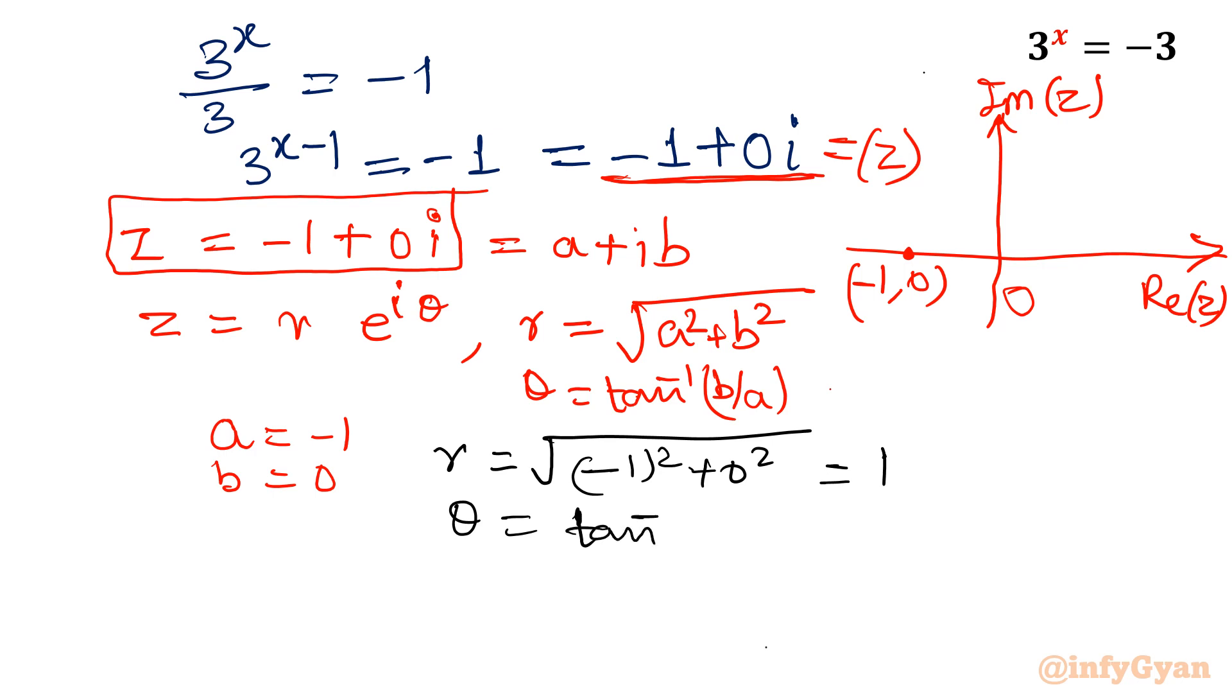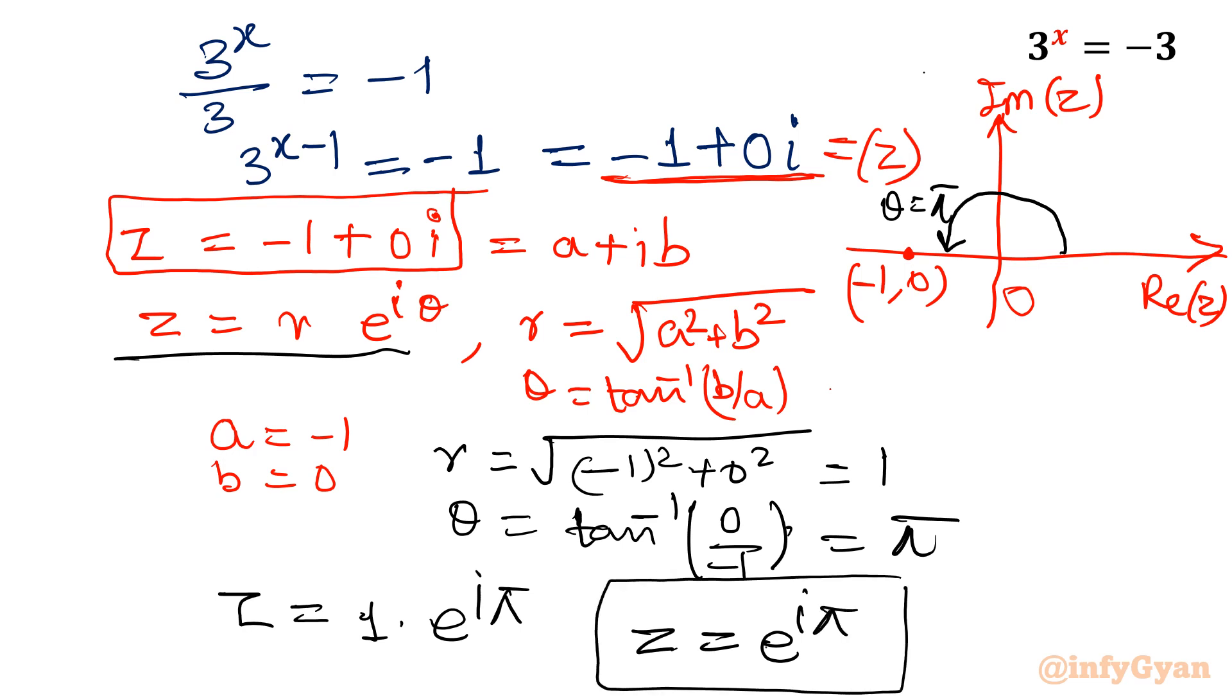Now come to theta. Tan inverse - you can see easily theta is equal to pi. By using formula b over a, I will write 0 over negative 1. That value will be pi. Now let's write in Euler's form. So z will be equal to r, so that is 1, e raised to the power i pi. Or z is equal to e raised to the power i pi - means our right hand side is e raised to the power i pi for a particular solution.